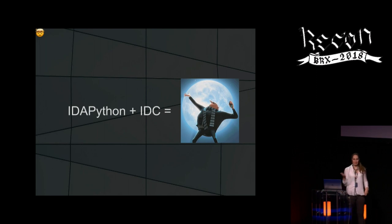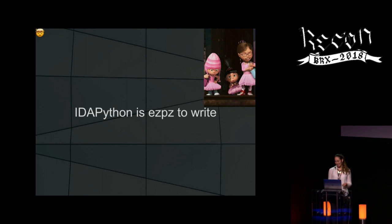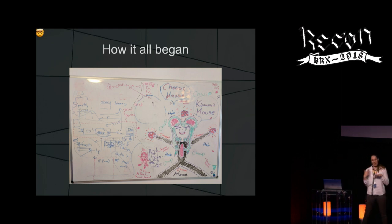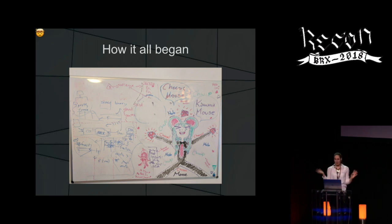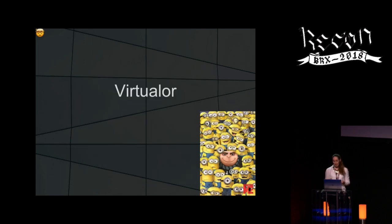IDA Python and IDC were quite an obvious solution that came to mind, since they are already provided by IDA and have lots of functionality that can help. IDA Python is easy to write, but IDC is more extensive. So I put everything on a whiteboard — you can see lots of ideas from my head all over it. There's also a picture a child of my friend painted for me while I worked on it. This is how VirtualHaler was born.